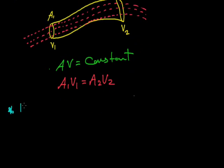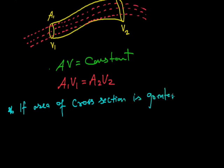It shows that if area of cross section is greater, velocity of liquid will be less.